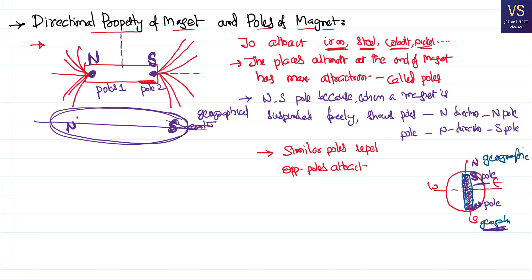Inside the earth, because of the flow of electric current, it behaves like a magnet such that along geographic north, there is a south pole of the earth magnet, and along geographic south, there is a north pole of the earth magnet. This north pole of the earth attracts the opposite pole — that is the south pole of the bar magnet. As similar poles repel and opposite poles attract, the south pole inside geographic north attracts the north pole of the bar magnet. That is why a freely suspended magnet always shows north and south.